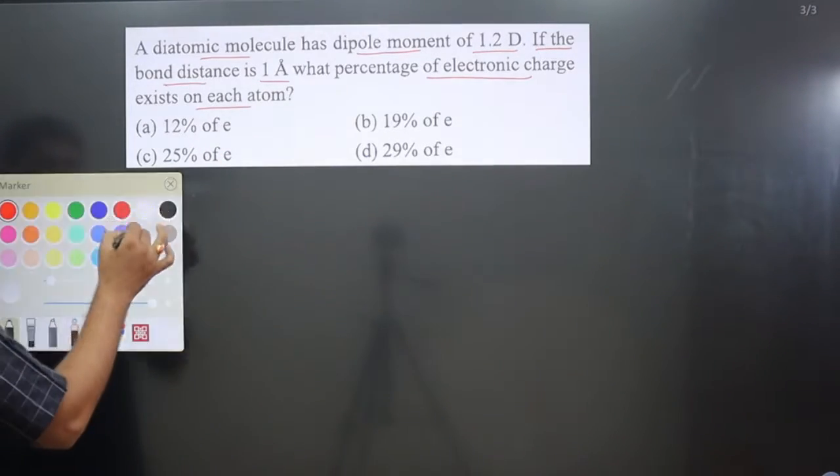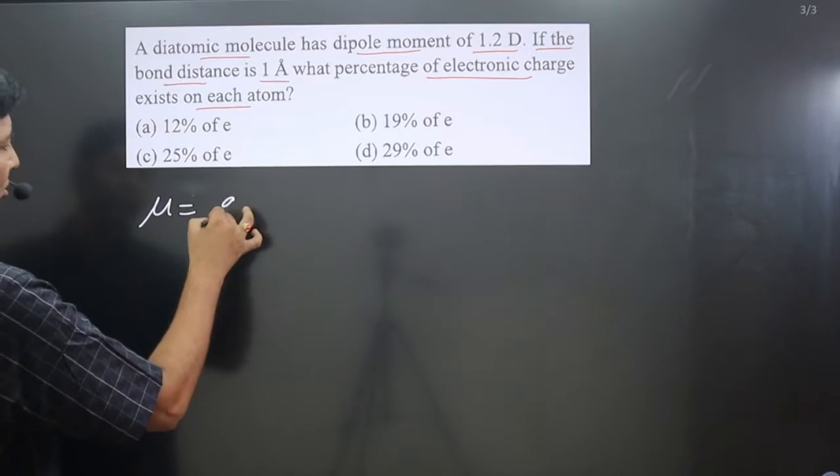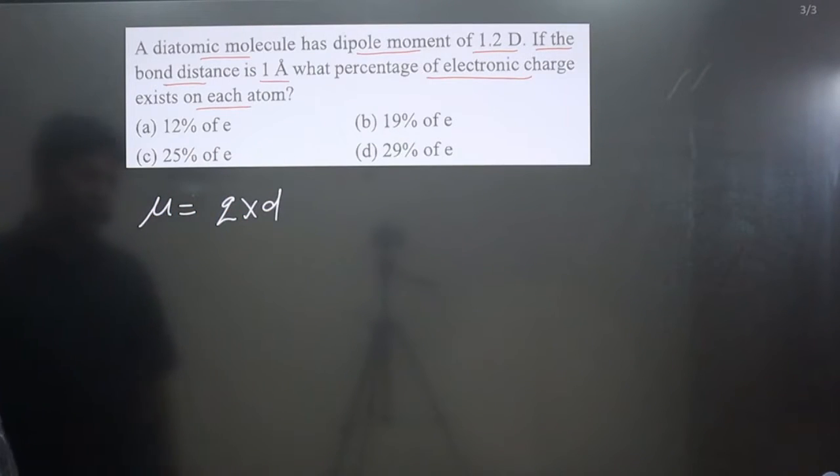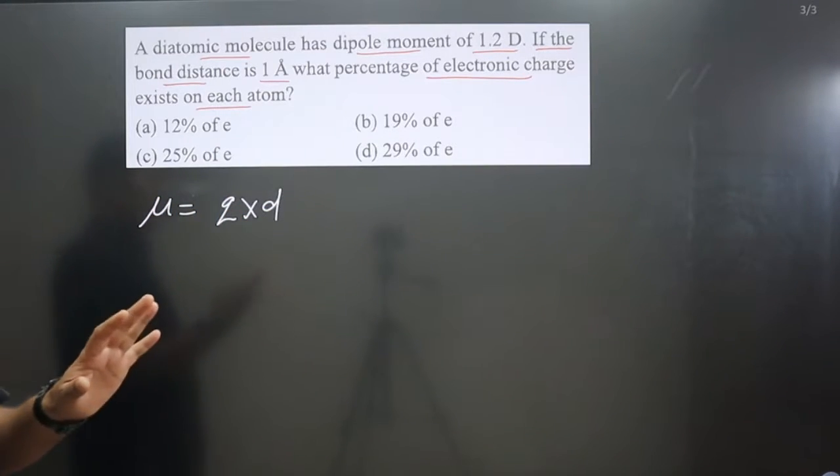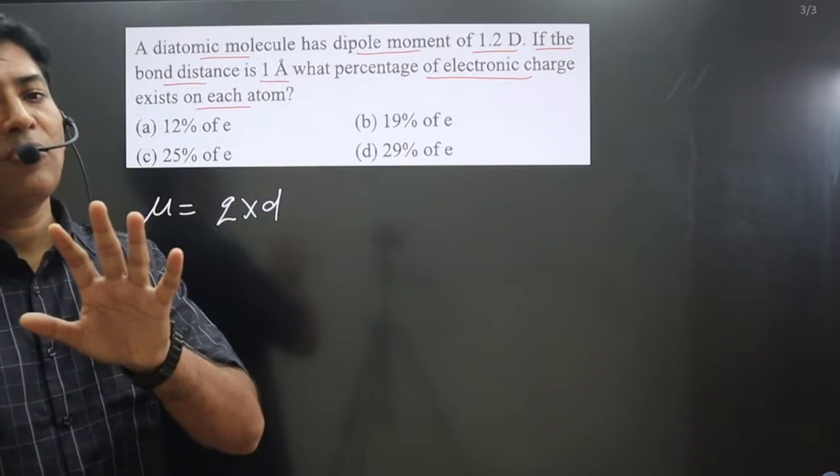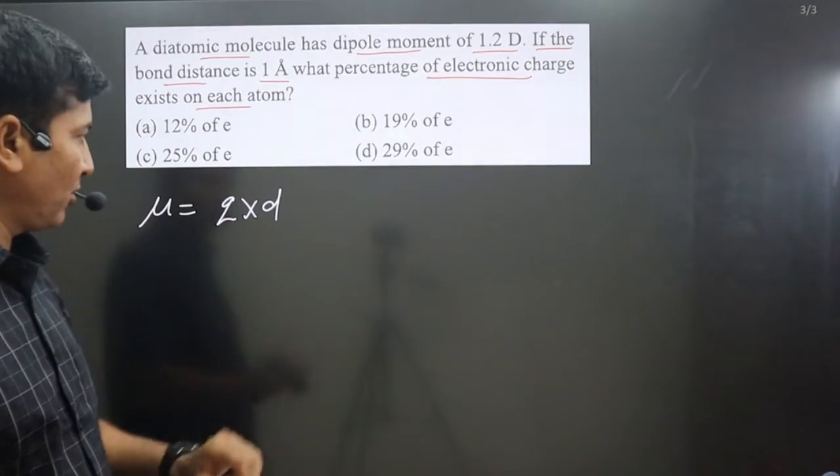Dipole moment as well as distance is given there and charge percentage we have to calculate. We have dipole moment formula mu is equal to charge multiplied by distance. Formula is very simple, but in this kind of problems you need to be careful with the unit. Pay attention carefully.